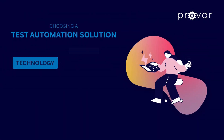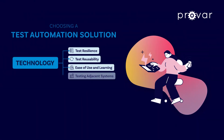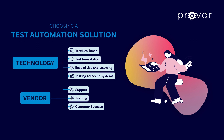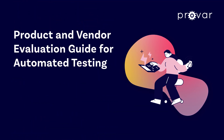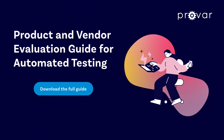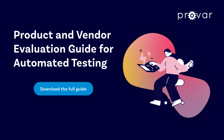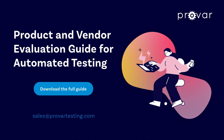So those are the basics of what to look for in a Salesforce test automation solution that fits your team's needs. You can also download Provar's product and vendor evaluation guide for automated testing, which has more helpful information including specific questions to ask and a list of demos you should request from potential vendors. For more guidance, no matter where you and your team are on your quality journey, connect with us at sales@provartesting.com today.